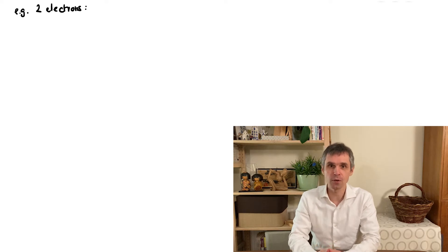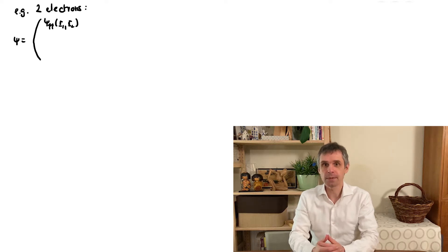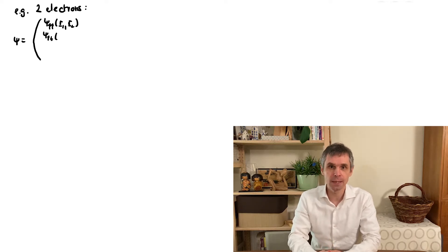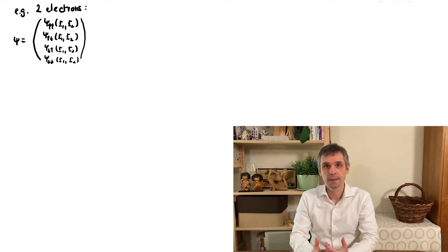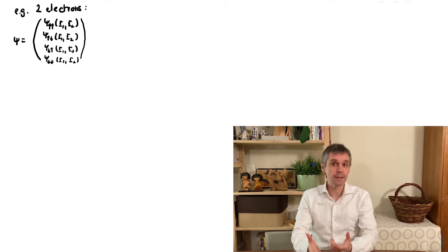First, we consider the general form of the wavefunction of two particles of spin one-half. This can be written as a four-component vector, where each component corresponds to a combination of the two spins pointing either up or down, and each component depends on the positions of the two particles. Without further constraints, this could be the wavefunction of two distinguishable particles, such as the electron and proton in a hydrogen atom.